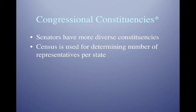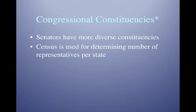Senators have more diverse constituencies. House districts tend to be very homogenous — red or blue. Most congressional districts are drawn to maximize one political party's seats. Take Tennessee: seven districts represent rural Tennessee and almost always send Republicans to Congress; two represent urban Tennessee and almost always send Democrats. If you represent an entire state, like Senator Blackburn representing all of Tennessee, you theoretically have to represent both rural and urban Tennesseans, making your constituency more diverse.